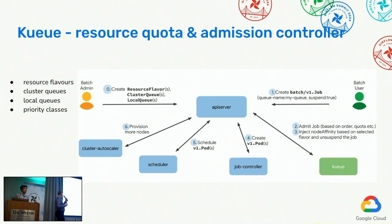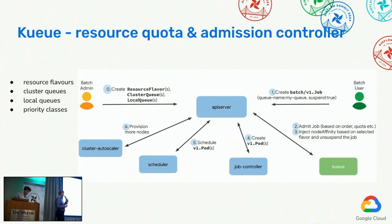The last thing that is required is priority. Priority carries the information about how critical a given workload is, and this information is used by Kueue to decide whether a given workload has higher priority over another. In case there is not enough resources in the GKE cluster, some lower-priority workload will be interrupted and evicted just to make space from a resource perspective for the higher-priority workload. Kueue takes into account all this information — resource flavors, cluster queues, local queues, and priority classes — and it exposes a batch API.